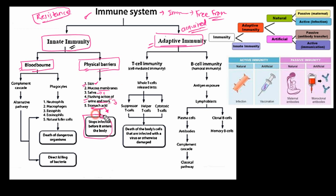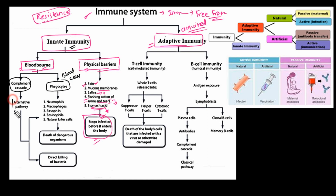Innate immunity is also mediated through the blood. Through blood components — including proteins and cells — we can get immunity. Our body defenses include the complement system. In the complement system, the alternative pathway is mainly involved. The alternative pathway is activated through antigens such as microbes. Different antigens in the microbes stimulate the alternative pathway, which we will see in detail in the tutorial on the complement system.